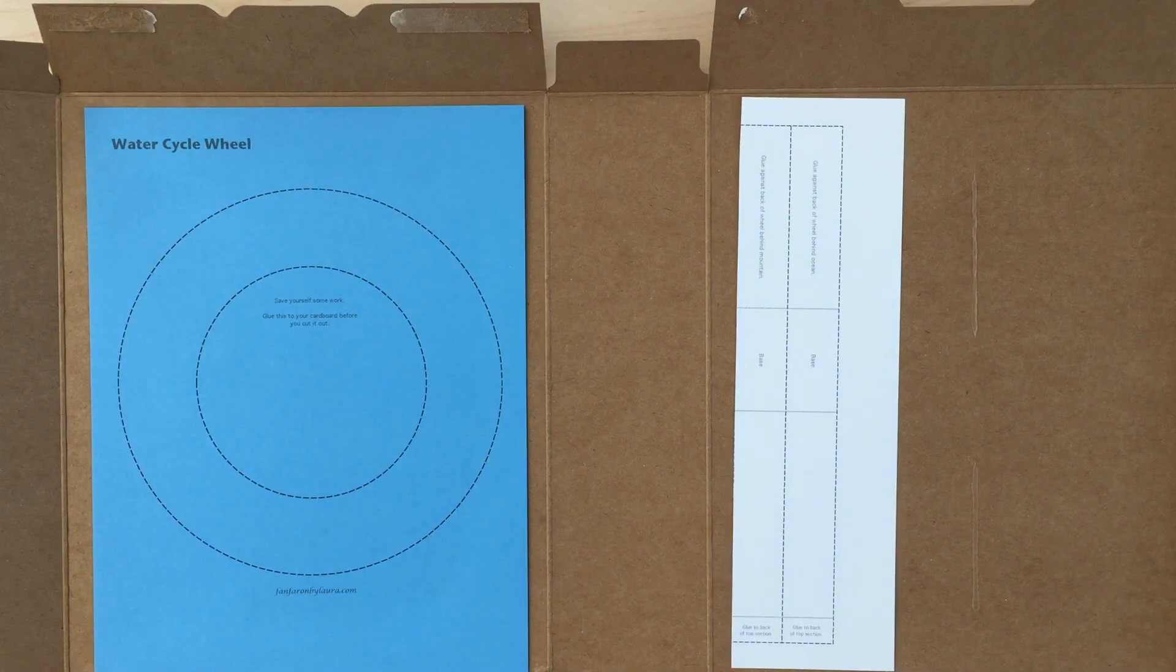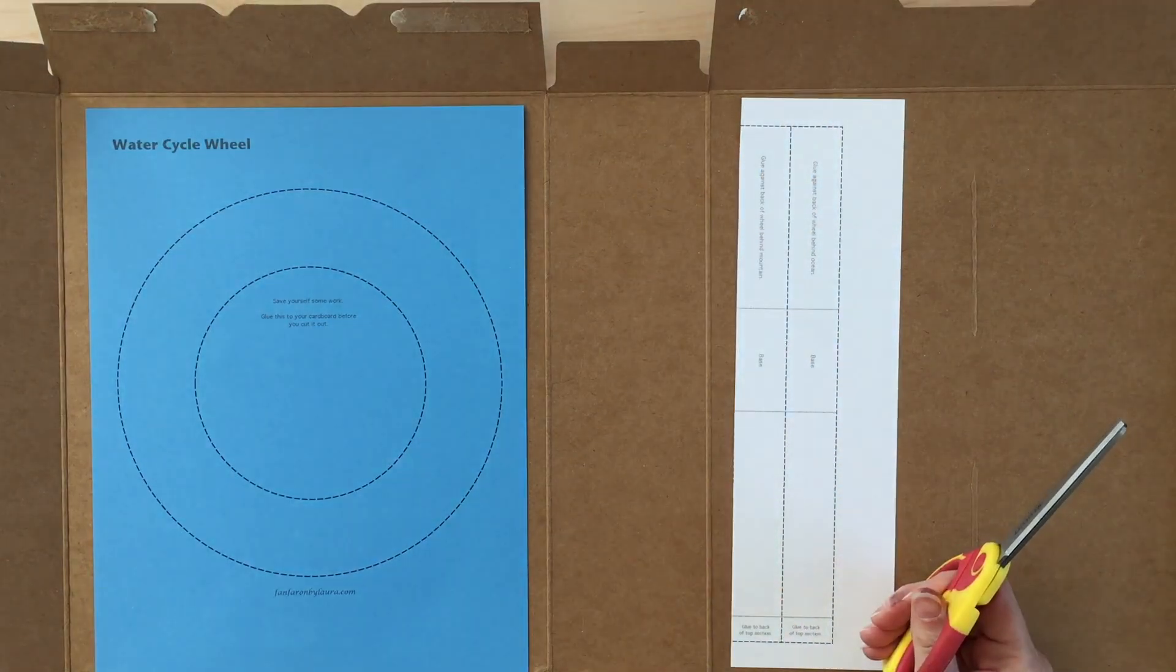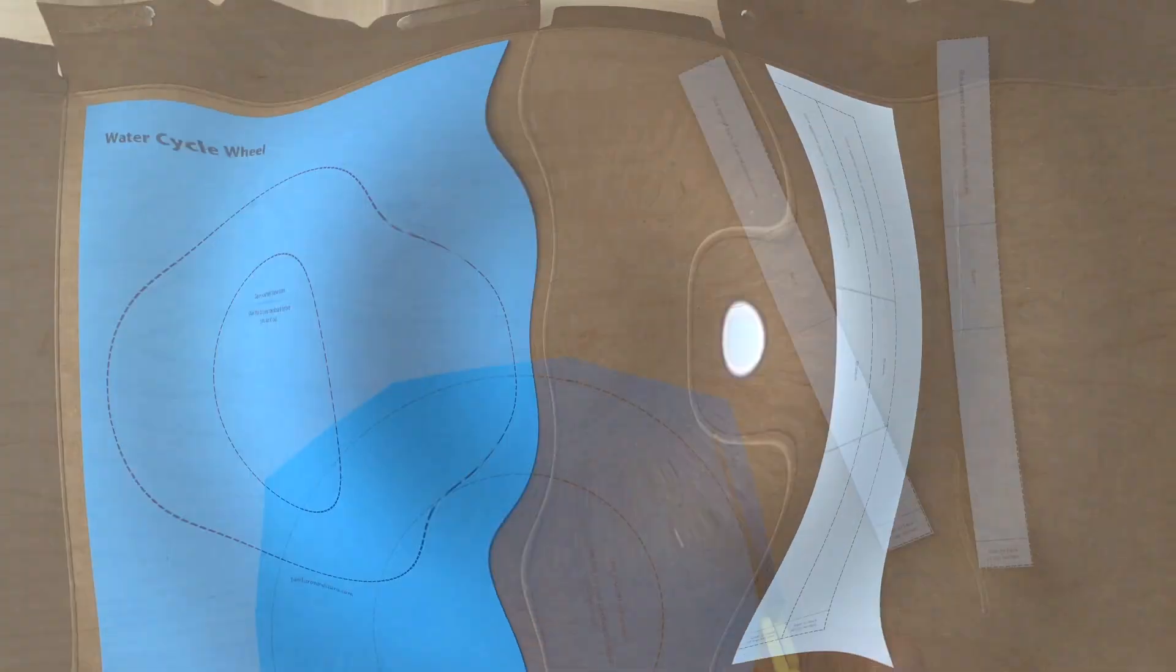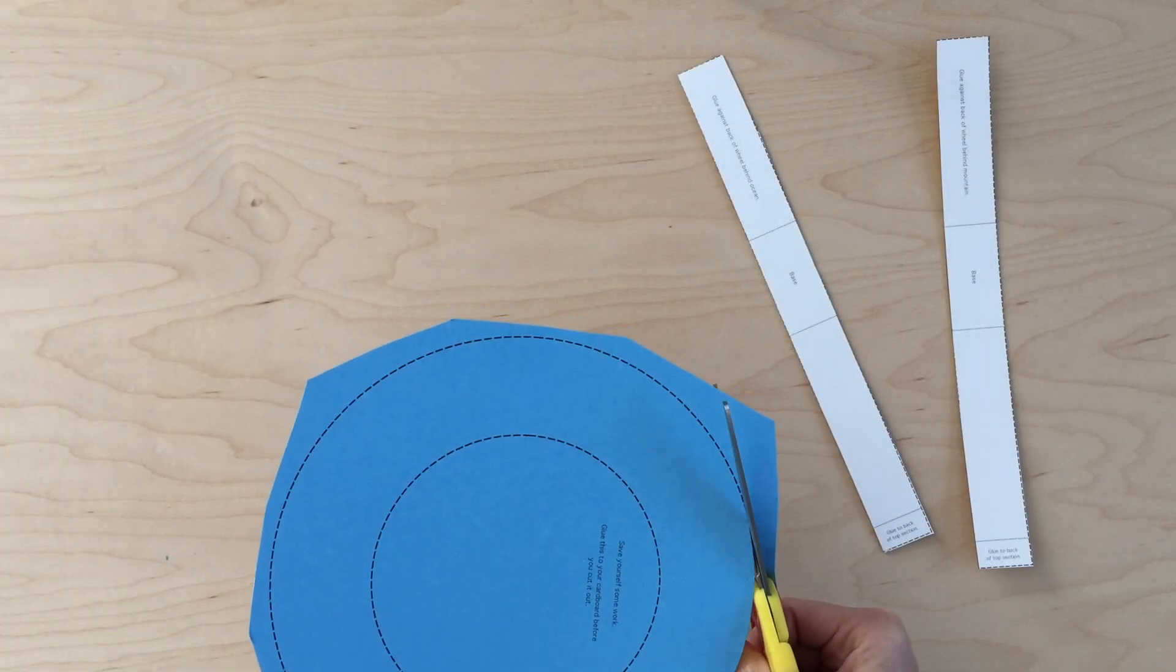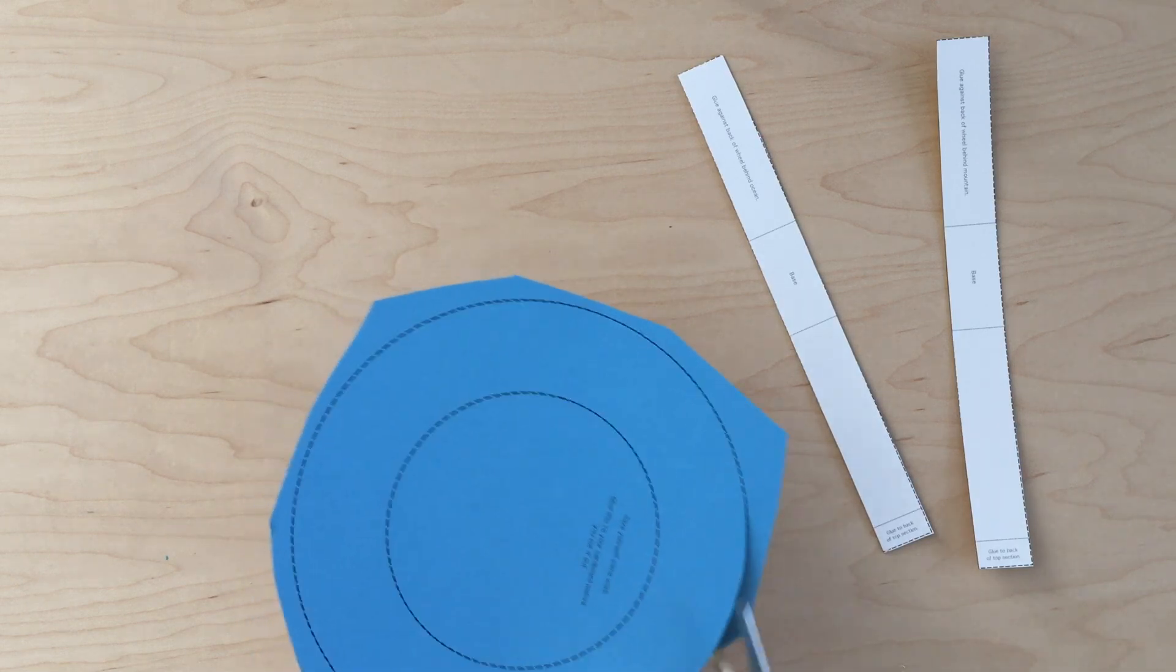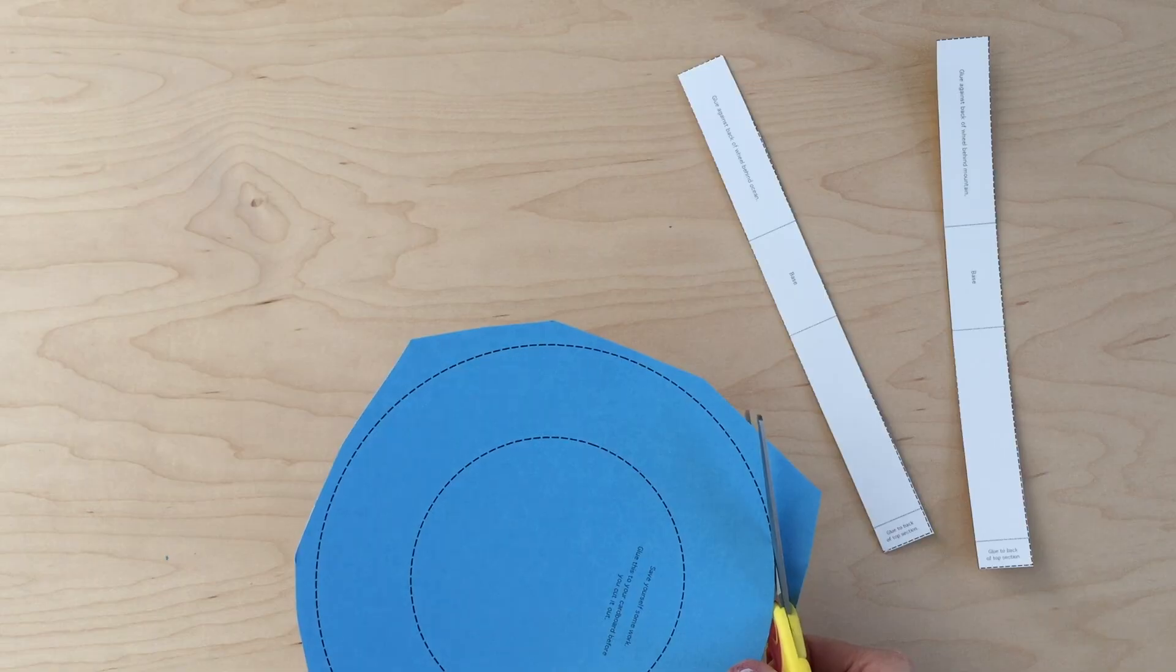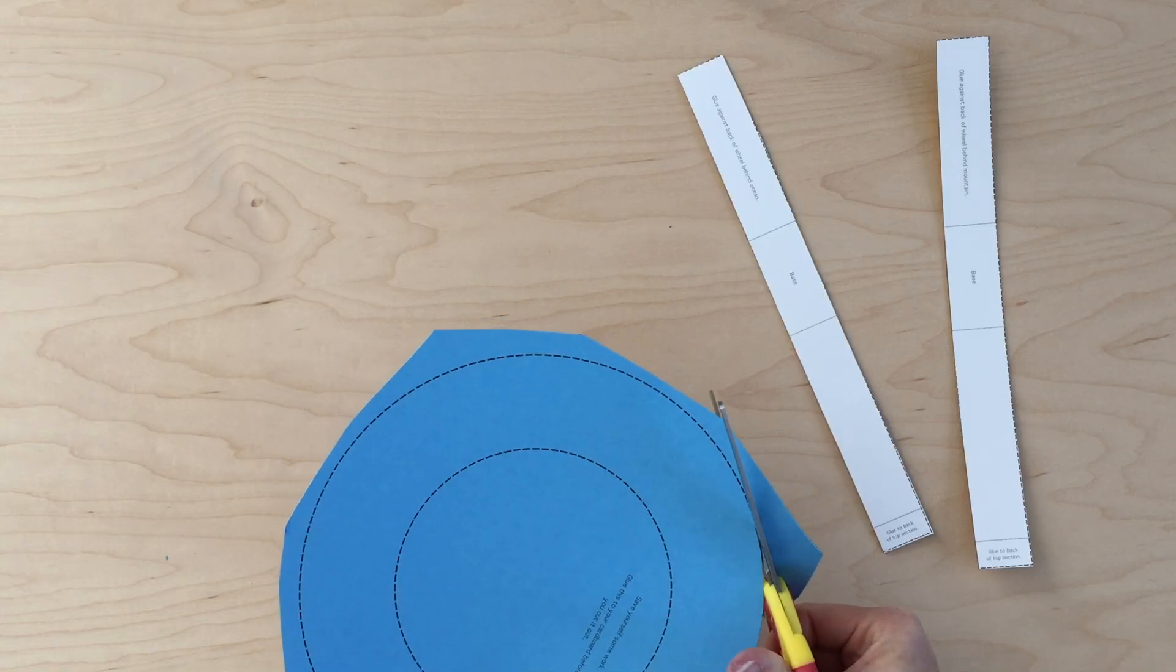Now we're ready to cut out everything. You're going to be cutting on these black dashed lines for all of your items. I found it hard to cut the wheel when I was cutting in such a big piece of cardboard, so I just cut roughly around the edges of it. I have found that that is making this a whole lot easier to cut through the cardboard.